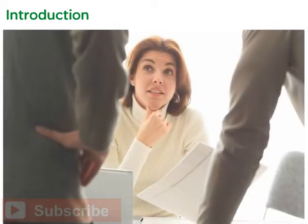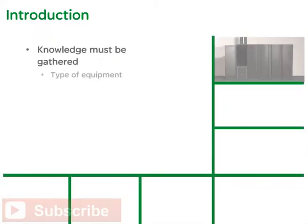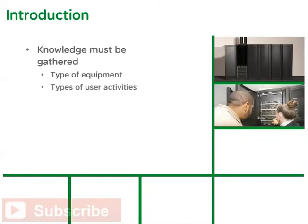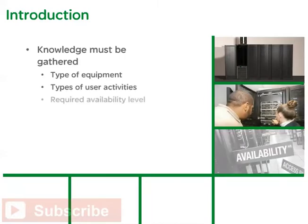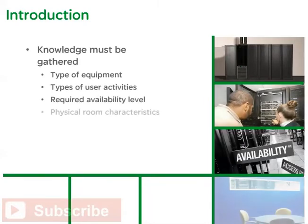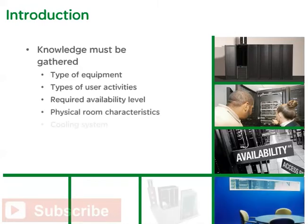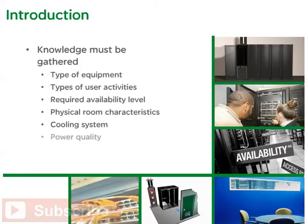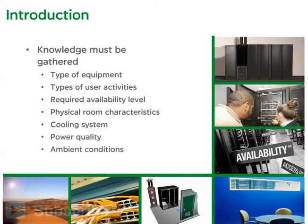Establishing a specification for a wiring closet or small computer room requires preparation. Knowledge must be gathered regarding the type of equipment that the room will house, the types of user activities that the room will support, the required availability level, the physical characteristics of the room, the cooling system of the building and of spaces adjacent to the room, the power quality available to the building and the room, and ambient conditions such as heat, humidity, dust, and risk of seismic activity.